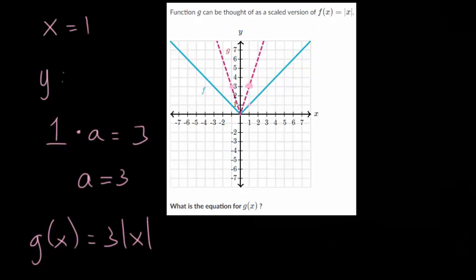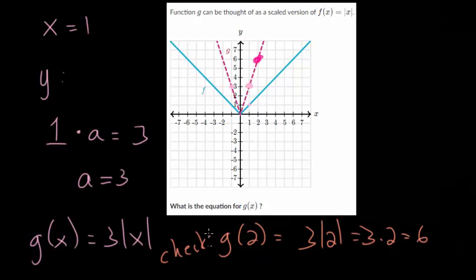And let's check it with one more point. So maybe this point right here, since we know that if we plug in 2, we should get back a y value of 6 on this curve g. So g of 2, we have 3 times the absolute value of 2, but that's just 2. So 3 times 2 is 6, but that's what we expected. Since we knew on this curve, if we plug in 2, you get a y value of 6. So since this worked, we can feel very confident that g of x is just 3 times the absolute value of x.